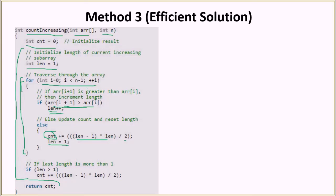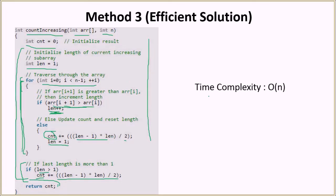After the loop ends, the last increment of length may not have been processed inside the loop. So we check: if length is greater than one after the loop, we add (length-1)*length/2 to the count and return it. This algorithm works in O(n) time complexity and O(1) extra space, which is exactly what we needed.